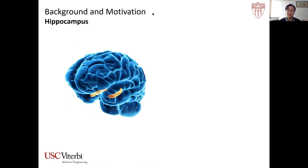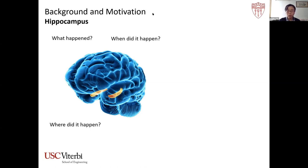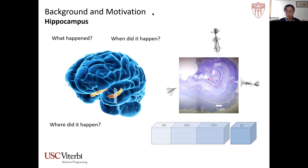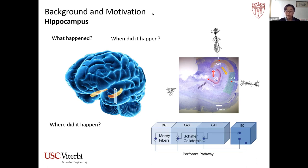The hippocampus is a crucial subcortical structure closely related to the formation of new long-term memories and declarative memories. Our ability to remember what happened, when and where, is highly dependent on the proper function of the hippocampus. Anatomically, the hippocampus consists of three major subregions: the dentate gyrus, CA3, and CA1. Projections from the entorhinal cortex to the dentate gyrus, then to CA3, then to CA1, form a trisynaptic circuit essential for processing memory information.